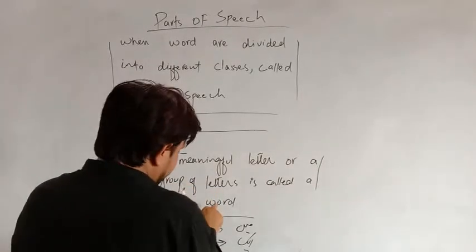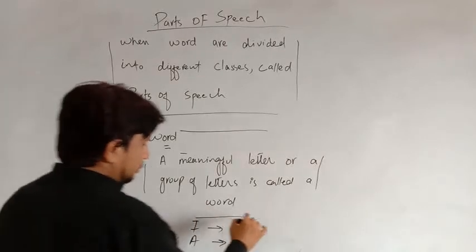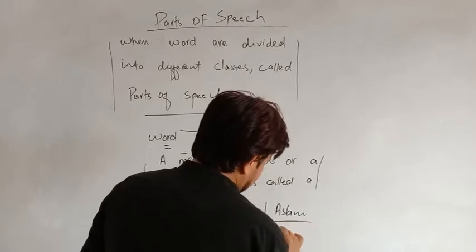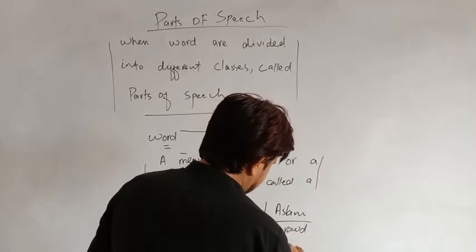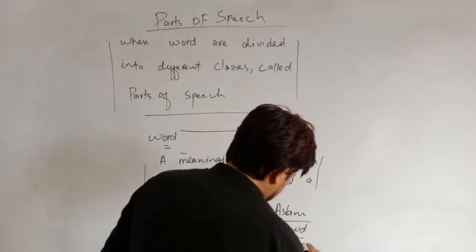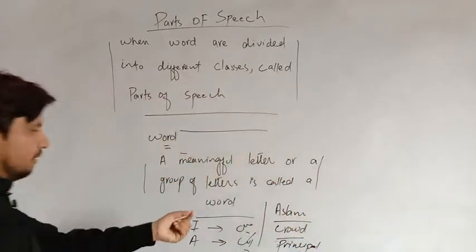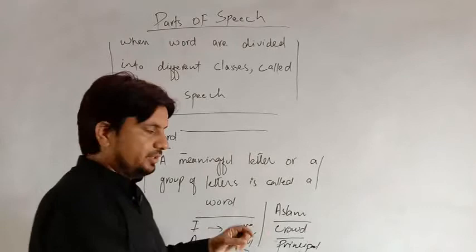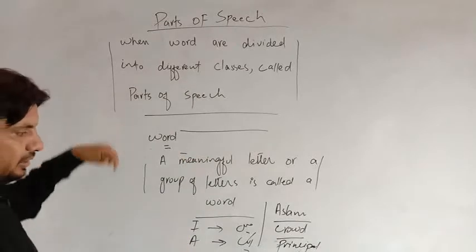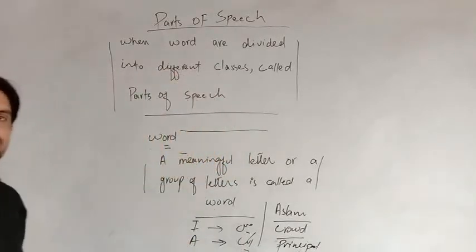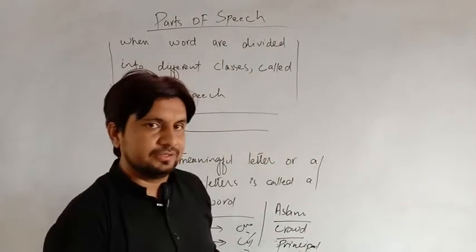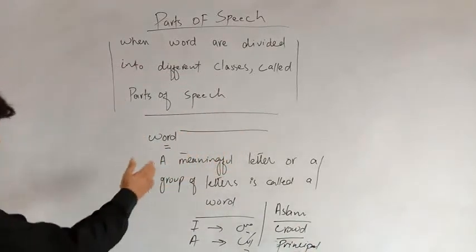Moving forward to the second part of the definition: a group of letters. If we talk about a name, a noun — like 'Aslam', or 'crowd', or 'principal' — all these words have some specific and particular meaning. Aslam is a noun; crowd means a large gathering; principal refers to the person who is leading any department or institution.